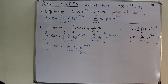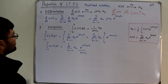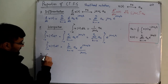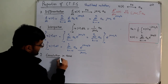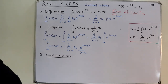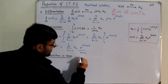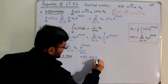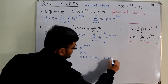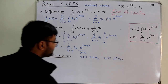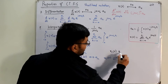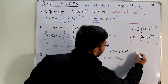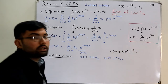Property number nine is convolution in the time domain. If x₁(t) has Fourier coefficient a1_k and x₂(t) has Fourier coefficient a2_k, the question is: if we convolve x₁(t) with x₂(t), what are the Fourier coefficients of the resulting signal?